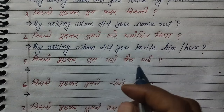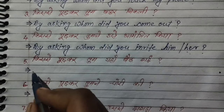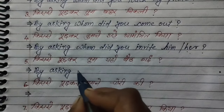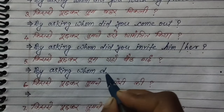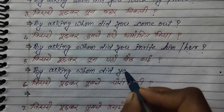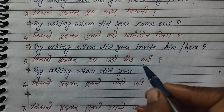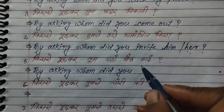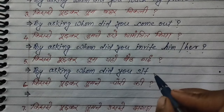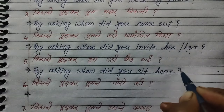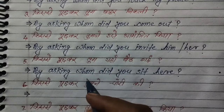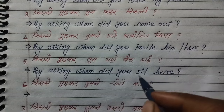'Kis se pooch kar tum yahan baith gayi' — by asking whom did you sit here? Structure: by asking whom + did + you + verb first form 'sit' + object 'here' + question mark. 'By asking whom did you sit here?' — meaning, who did you ask before sitting here?